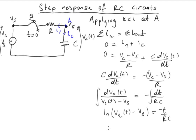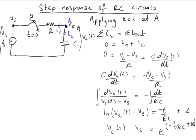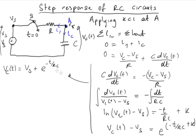If we take e of both sides, that gives us vc(t) minus VS equals e raised to the power (negative t over RC plus K), where K is the constant of integration. So vc(t) is equal to VS plus e raised to (negative t over RC) multiplied by some constant, which we can call big K.